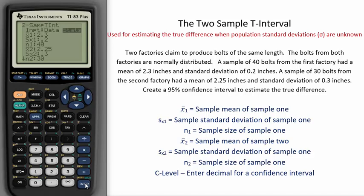Two factories claim to produce bolts of the same length. The bolts from both factories are normally distributed. A sample of 40 bolts from the first factory had a mean of 2.3 inches and a standard deviation of 0.2 inches.